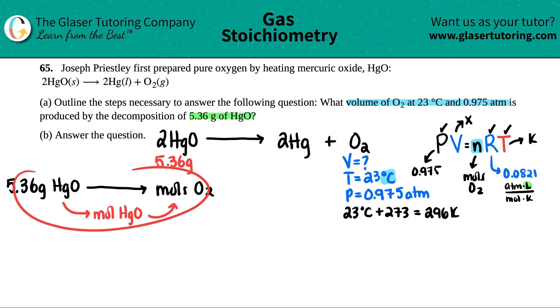Let's go for it. 5.36 grams of HgO—I'll put that down at the bottom. Grams of HgO, we need to go to moles of HgO because we can only convert from moles to moles using the balanced equation. So grams of HgO on the bottom and moles of HgO up on top.